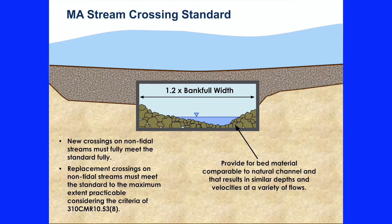So we know if we have, for example, a bankful width of 10 feet, we know that structure is going to be 12 feet wide. And then that structure in the river can naturally function as much as possible.